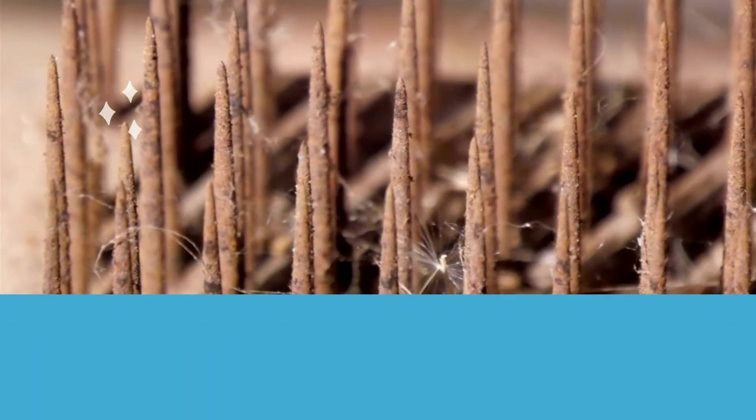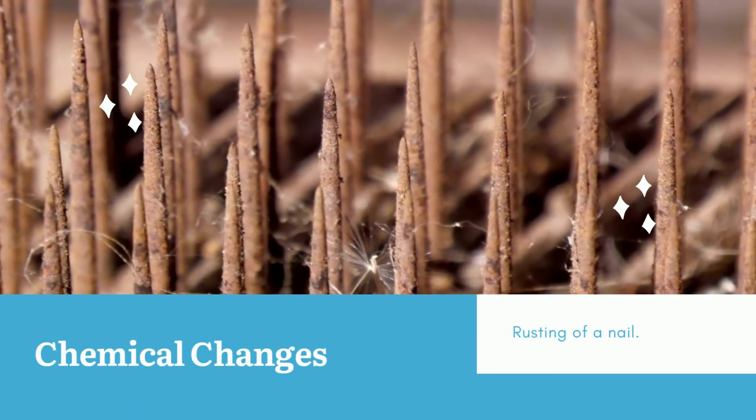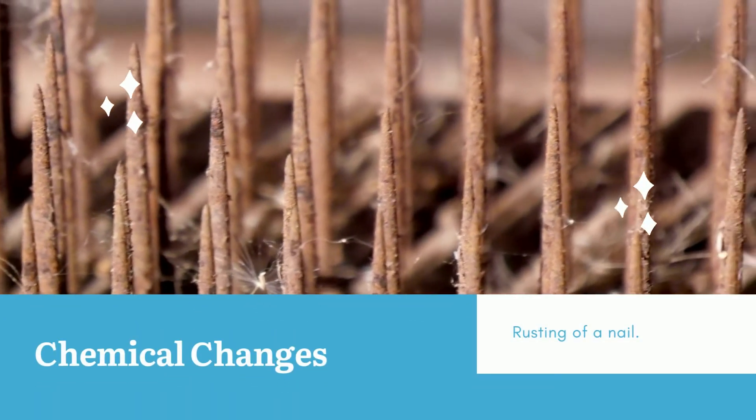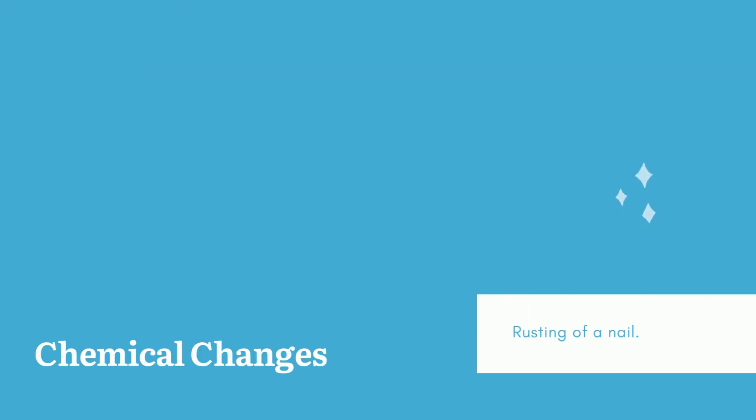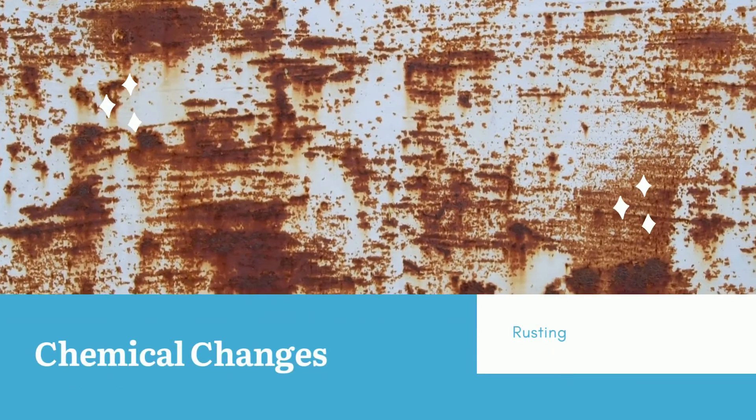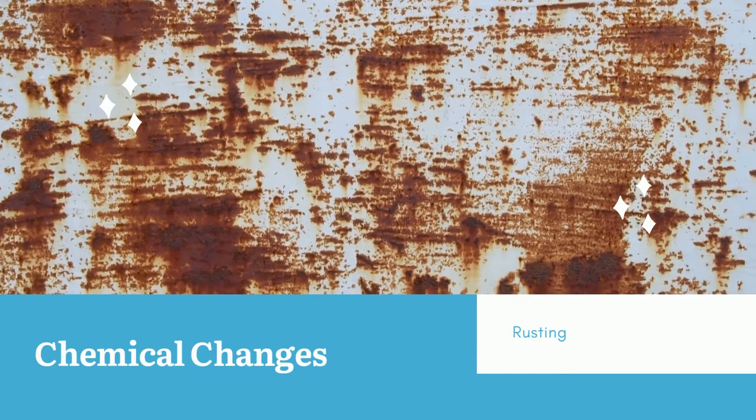A chemical change also occurs when a nail rusts. When the iron in the nail is exposed to air, it can react with oxygen in the air to form a new substance called an iron oxide, otherwise known as rust.